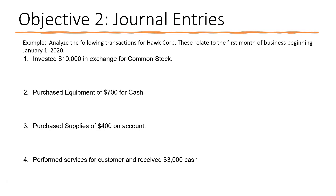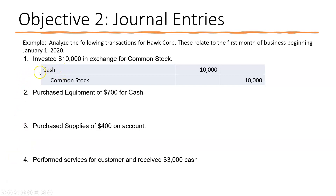Transaction one: invested $10,000 in exchange for common stock. Investors gave the company $10,000 and now own part of the company. The journal entry is: debit cash $10,000, credit common stock $10,000. Remember, when you do journal entries, the debit is listed first on the left side of the columns; if it's a credit, the account name is indented and the figure goes on the right side. Debits equal credits. You can also add the date and an explanation.